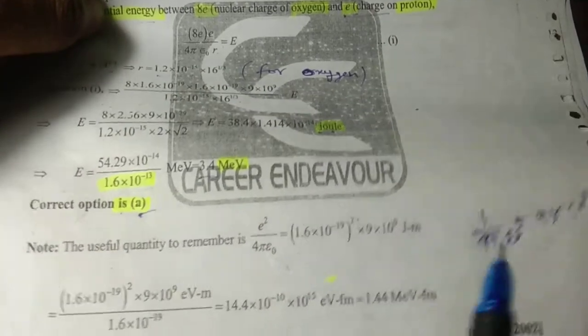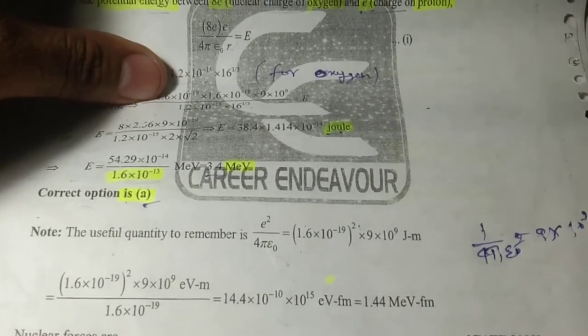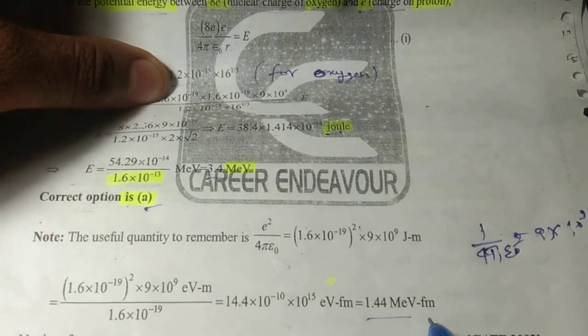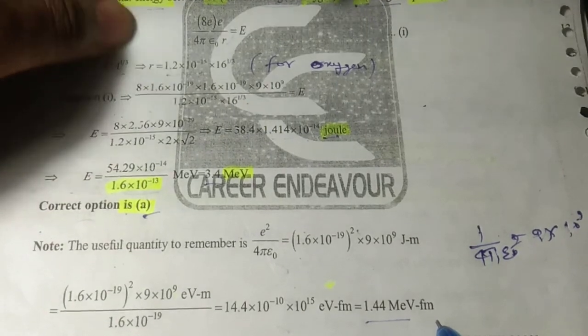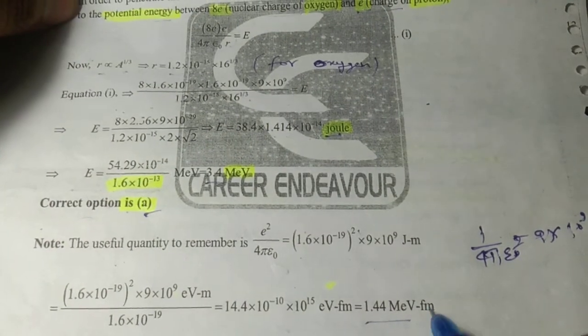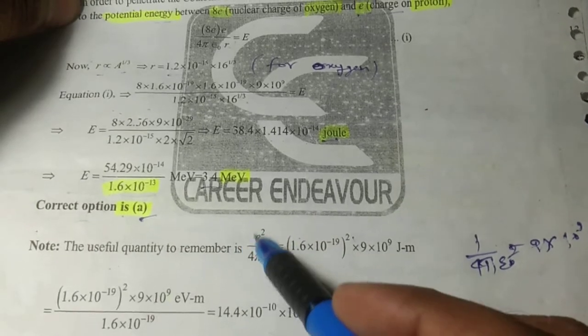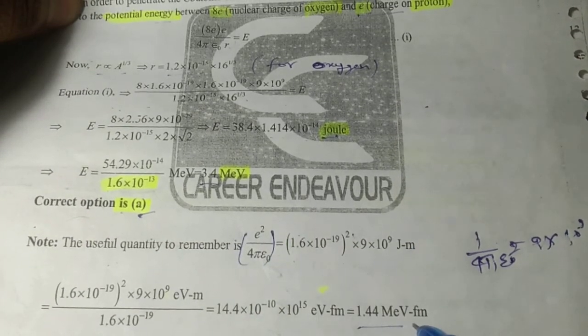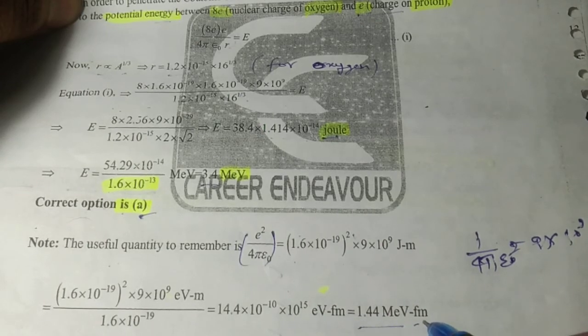And finally, this is equal to 1.44 MeV·fermi. So remember, this value is 1.44 MeV·fermi.